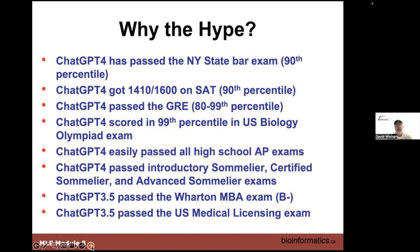ChatGPT 4 not only passed the LSAT to get into law school, it passed the New York State Bar Exam. On the SAT, it would have scored above the 90th percentile — probably good enough to get into universities like Berkeley. On the GRE it does very well, and on the US Biology Olympiad exam it scored in the 99th percentile. All high school AP exams were passed by ChatGPT 4. It can also pass the sommelier introductory, certified, and advanced exams, passed the Wharton MBA exam, and passed the US Medical Licensing Exam — sufficient to become a doctor.